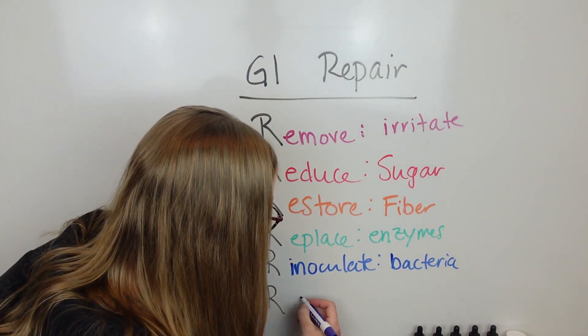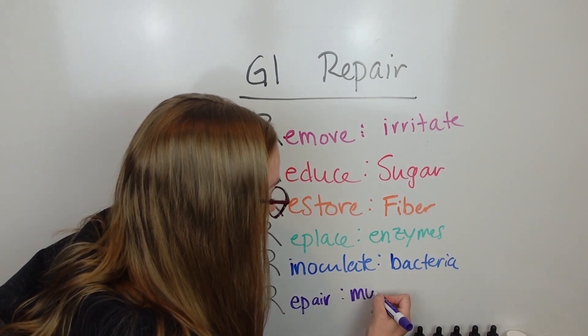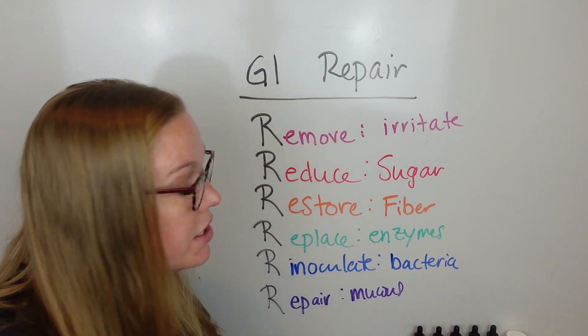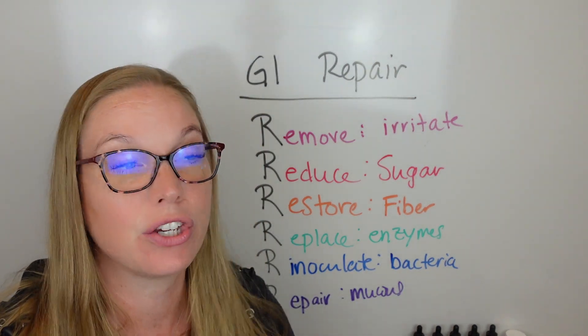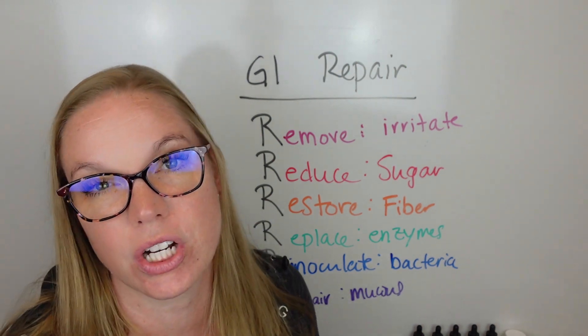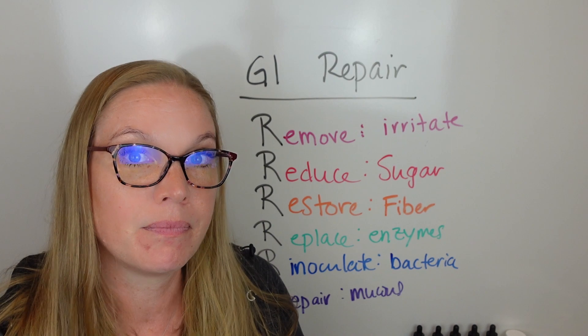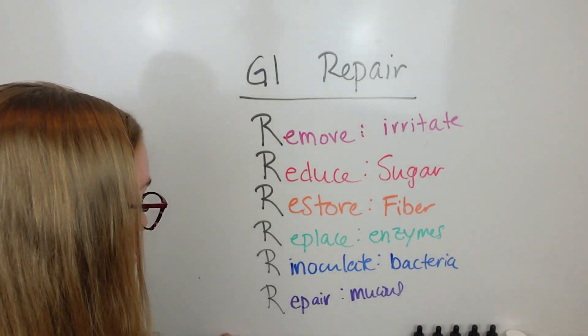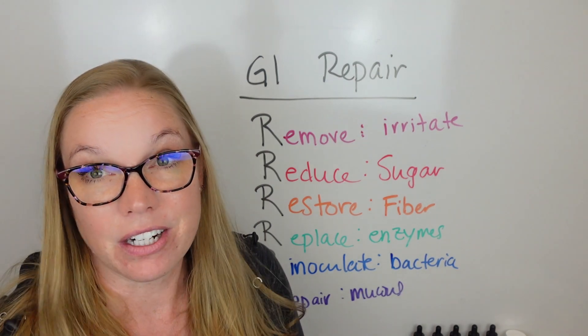Which leads me to the last one, which is repair. And this is related to the mucus lining in your gut, which is really strongly connected with things like your immune response, neurotransmitter production, all these other things. It's really important that you have a good mucus lining. When your mucus lining goes, everything can become an irritant for your gut. So, these are the six R's for gut repair.